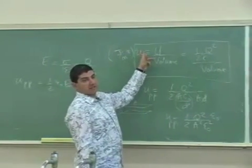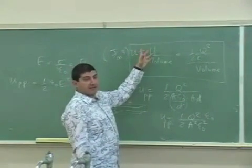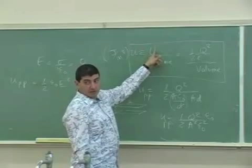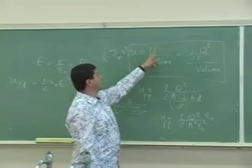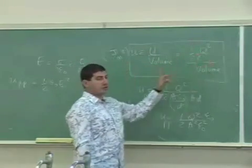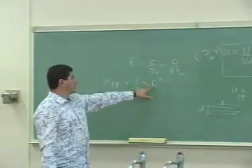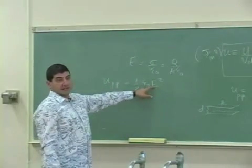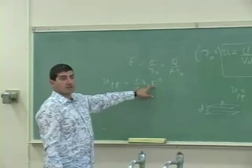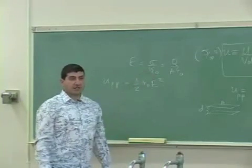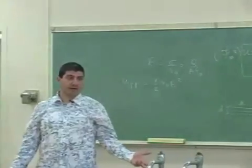So the reason why I went through that and derived that is because now I can find the energy density without having to use the total energy and the volume. For example, the problem asks me find the energy density without asking me find the total energy. I can simply, if I already know the electric field, I can simply square the electric field and then multiply by half ε₀.